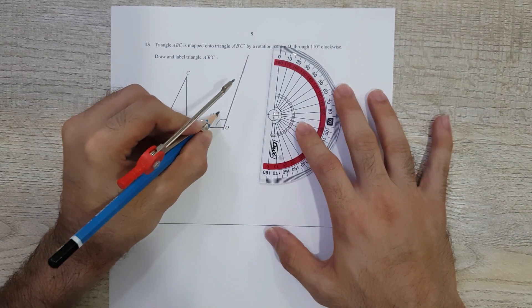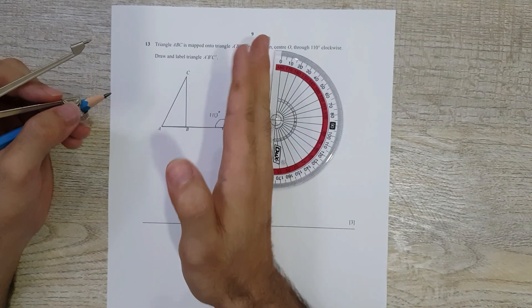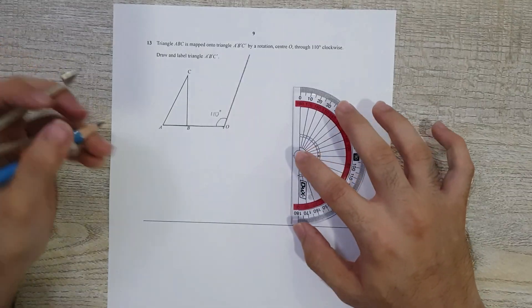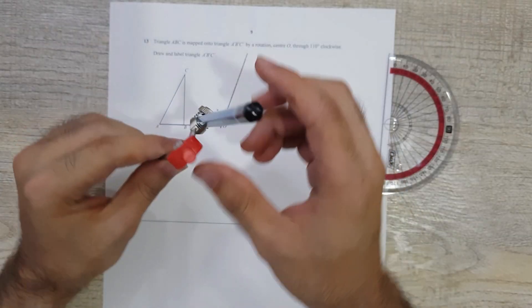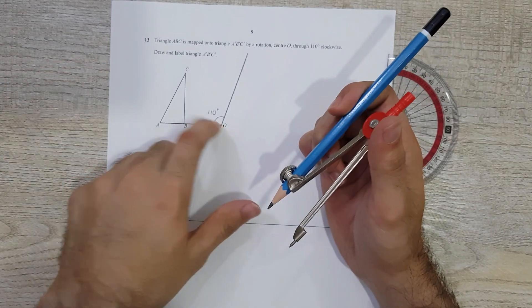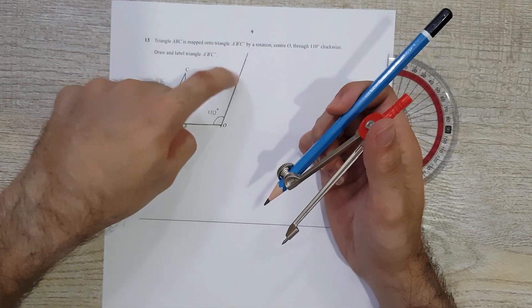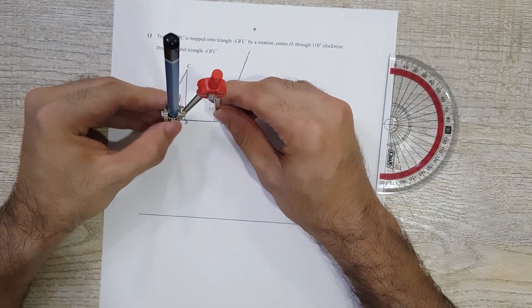This angle is 110 degrees done in a clockwise direction. Now I've got to find out where exactly A' and B' are. You can do this with a scale—measure how far A is and how far B is and mark them on this line respectively—but I'd like to do this with the help of a compass.